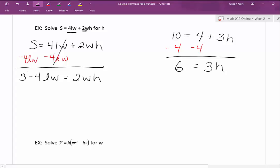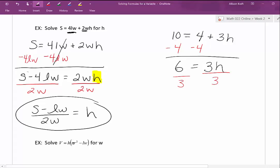S minus 4LW equals 2W times H. Back to the problem over on the right. To isolate H, we would then just divide by the coefficient. We're going to do that same thing on our original problem. To isolate the H, I need to get rid of that multiplication by 2 and W. So we will divide by both 2 and W.